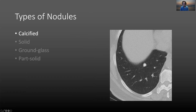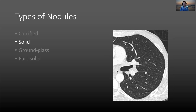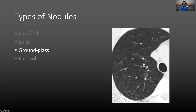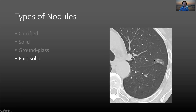Let's go through different types of nodules. There's the calcified nodule, pretty straightforward. We have the solid nodule, where the density of the nodule is equal to that of blood vessels in the lung. We have a ground glass nodule, where the density of this well-defined lesion is less than that of the adjacent blood vessels. And of course we have a part-solid nodule, which has both ground glass and solid components. We'll come back to these nodules later in the talk.